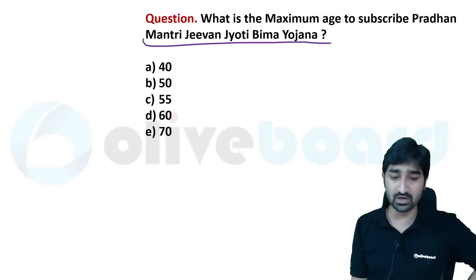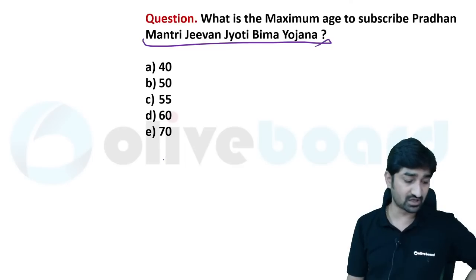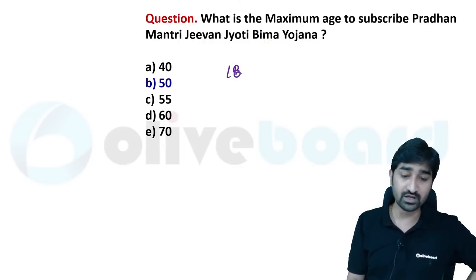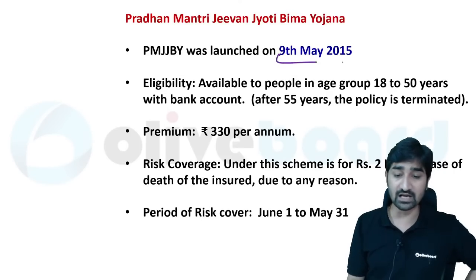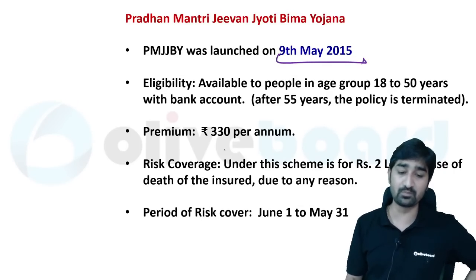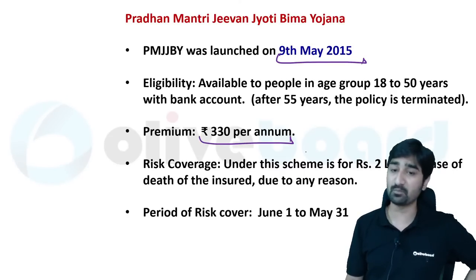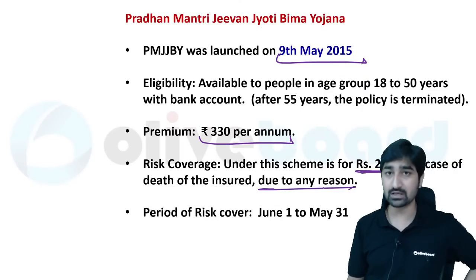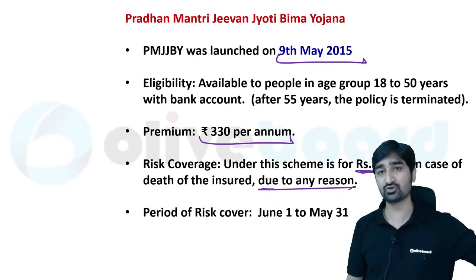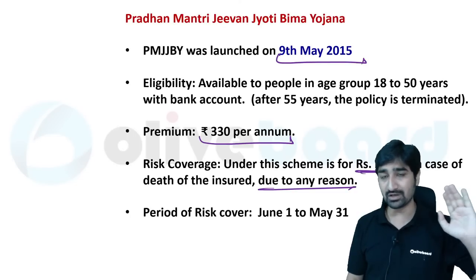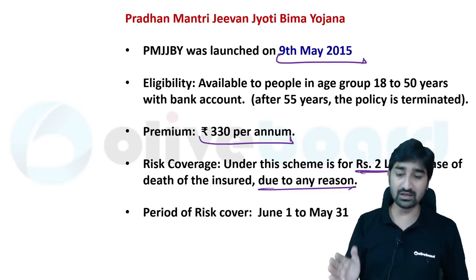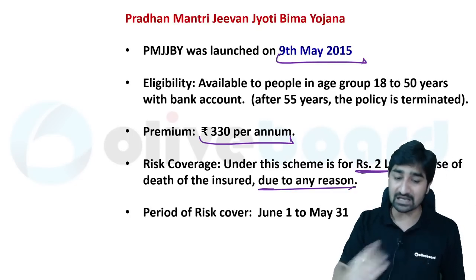Pradhan Mantri Jeevan Jyoti Bima Yojana — the maximum age to subscribe is 50, with minimum age 18, so the age group is 18 to 50. It was launched on 9th May 2015 by PM Modi. The insurance premium is 330 rupees per year with 2 lakh rupees risk cover in case of death due to any reason. The key difference: PM Suraksha Bima Yojana covers death due to accident only, while PM Jeevan Jyoti Bima Yojana covers death due to any reason.